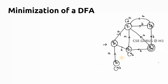Let us consider this example of a deterministic finite automaton that we need to minimize. It has six states: q0, q1, q2, q3, q4, and q5. The first thing we need to check is whether every state is reachable from the initial state. If a state is not reachable, we remove it.